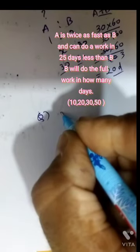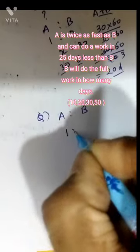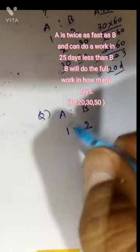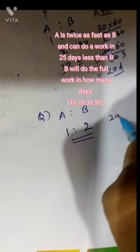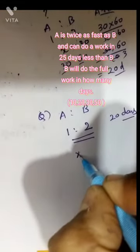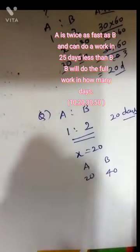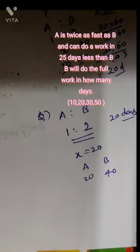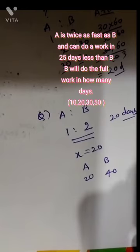One more question: A is twice as efficient as B. A is to B ratio is 1 is to 2. A is able to finish a work in 20 days less than B. So the difference between A and B is 20 days. Therefore 2x minus 1x equals x equals 20. A is 20 days, B equals 40 days. The question asks: B can finish the work in how many days? Answer: B is 40 days.